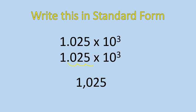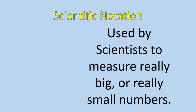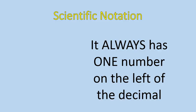Now I told you we'd talk a little bit about scientific notation. Basically what scientific notation is, it's a way that scientists measure really big numbers or really small numbers — they represent those really large and small numbers using powers of 10. The difference is that they always end up with one number on the left of the decimal. It's basically like powers of 10 in reverse. So I'll start with a large number like 23,456, and if I want to write it in scientific notation, I'm basically going to do the opposite of what I did before.